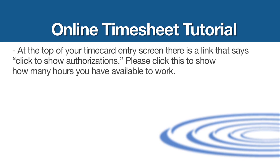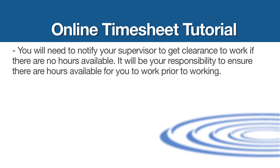Please note that at the top of your time card entry screen, there is a link that says Click to Show Authorizations. Please click this to show how many hours you have available to work. You will need to notify your supervisor to get clearance to work if there are no hours available. It will be your responsibility to ensure there are hours available for you to work prior to working.